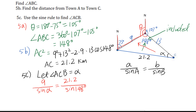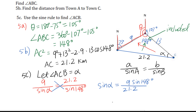Cross multiply — the same line with the variable goes to the denominator. So we have alpha equals inverse sine of 9 times sine 148 degrees over 21.2.